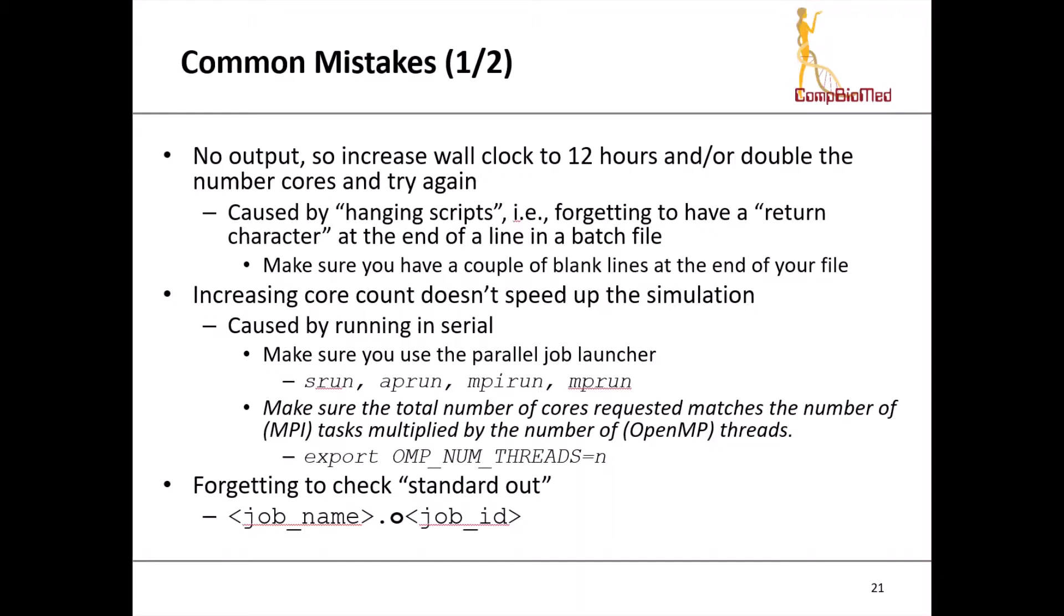Perhaps you have forgotten to use the parallel job launcher, which takes an application and will run it in parallel for you. These are srun, aprun, mpirun, mprun, these are just examples. When you run your job in parallel, you have to make sure that the total number of cores that you've requested is the same as the total number of tasks you're running multiplied by the total number of threads you're running. Python, for instance, will be running threads only and won't be running in tasks. The way you set the number of threads is using export OMP_NUM_THREADS equals N, where N is the number of threads you want to run on. You might forget to check the standard out file. There are two files generated when you run on the batch system: standard out and standard error. This is the job name followed by .o and then the number that the batch system gave your job.